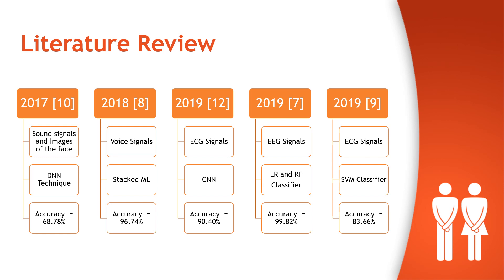In 2019, there has been a lot of work related to gender classification. One author used ECG signals for classification and a CNN technique was applied, achieving an accuracy of 90.40%. In the same year, EEG signals were used as dataset and LR and RF classifiers were applied, achieving an accuracy of 99.82%. Also in 2019, ECG signals were again used with an SVM classifier, achieving an accuracy of 83.66%.